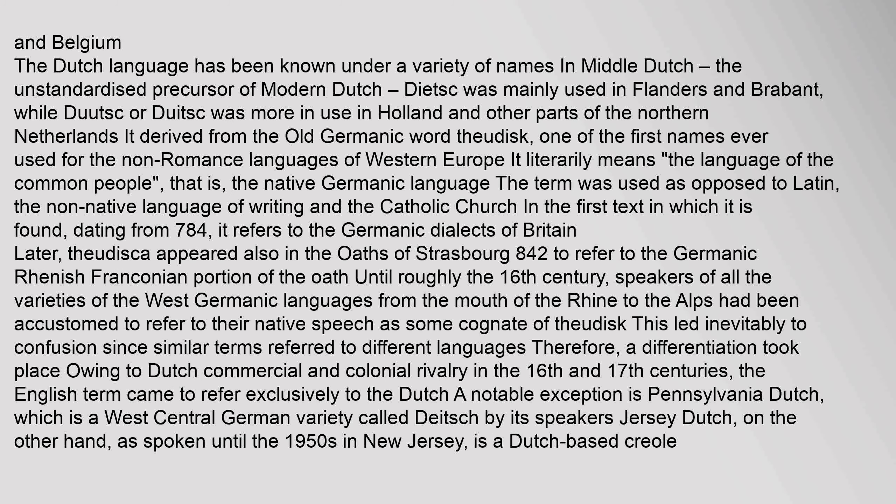In Belgium, the Dutch language has been known under a variety of names. In Middle Dutch, the unstandardized precursor of modern Dutch, 'Dietsc' was mainly used in Flanders and Brabant, while 'Duutsc' was more in use in Holland and other parts of the Northern Netherlands. It derived from the old Germanic word 'Theodisk,' one of the first names ever used for the non-Romance languages of Western Europe, literally meaning 'the language of the common people' — the native Germanic language, as opposed to Latin.